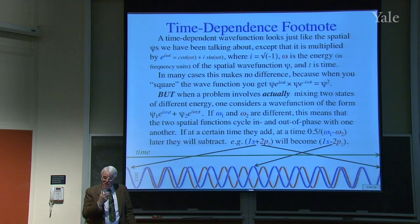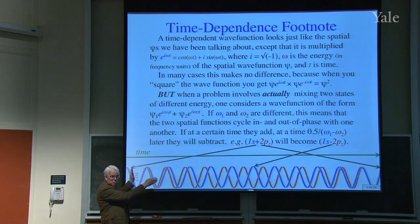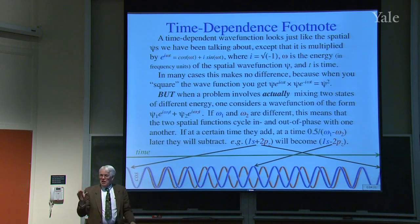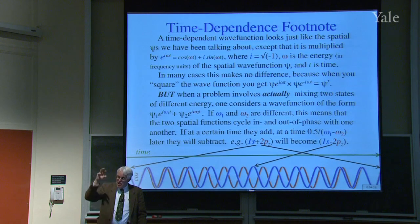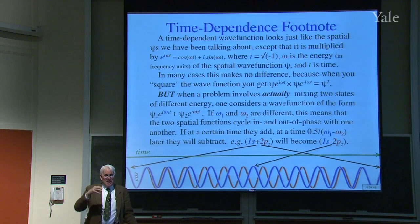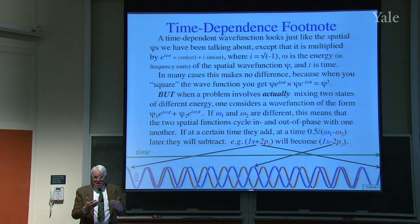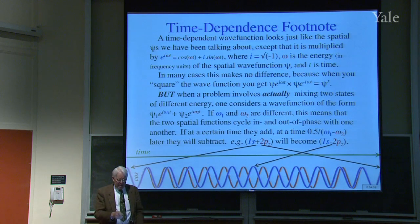An electric field oscillating up then down then up then down favors the mixture alternately, and the light interacts with the electrons, pushing them up and down and mixing 1s with 2p. If you do that for a while and then turn the light off, the electron may end up in the s+p state rather than where it started. So you can get absorption or emission of light because of this time dependence.